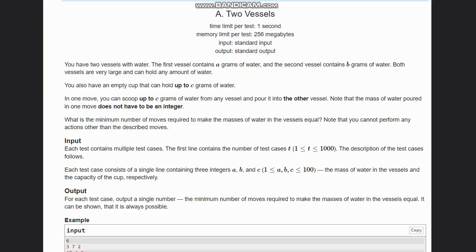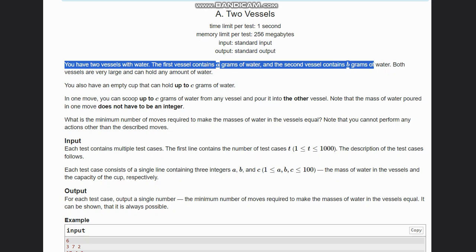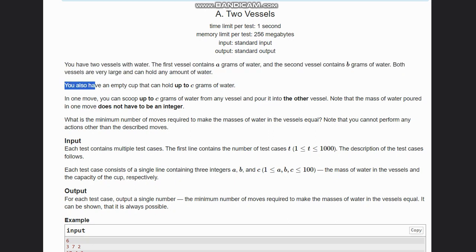Hello everyone, welcome to the channel. So here we are discussing the question Two Vessels on CodeForces. The problem states that you have two vessels with water. The first vessel contains a grams of water and the second vessel contains b grams of water. Both vessels are very large and can hold any amount of water.